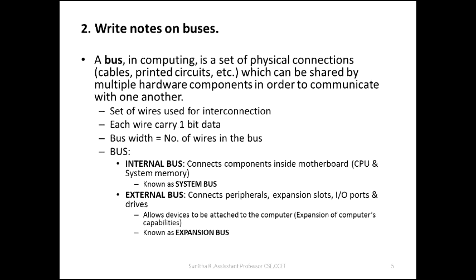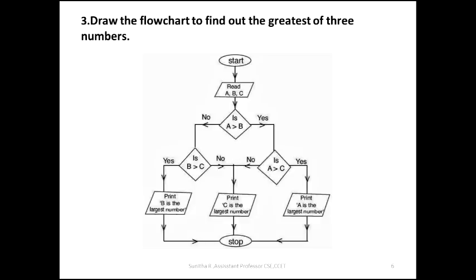Moving to the next question: draw the flowchart to find out the greatest of three numbers. It is simple. Looking at the flowchart symbols — start symbol, input/output, decision-making diamond. So I'm going to start: start, then read three numbers. Let them be A, B, and C. Check the first and second number, then check with the third number to finalize the largest number.